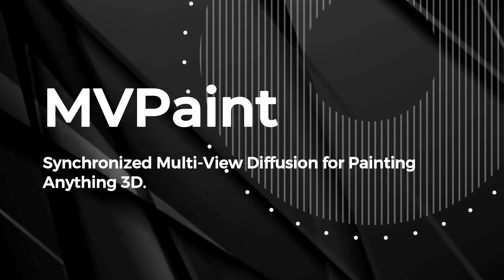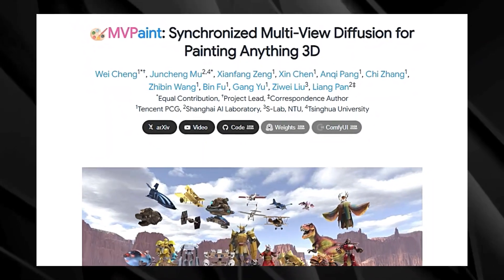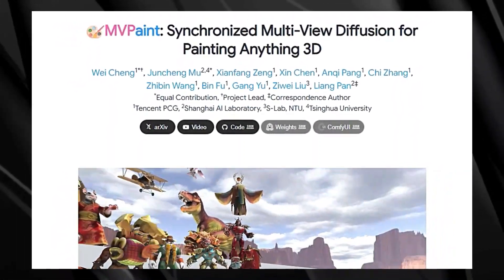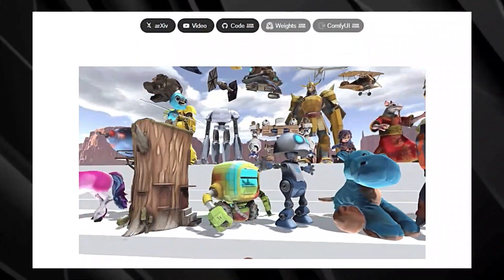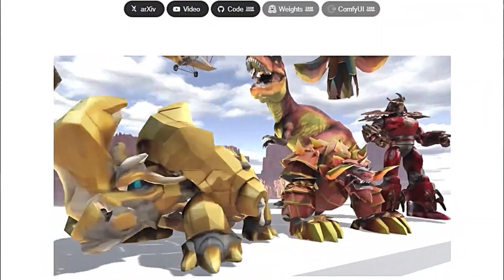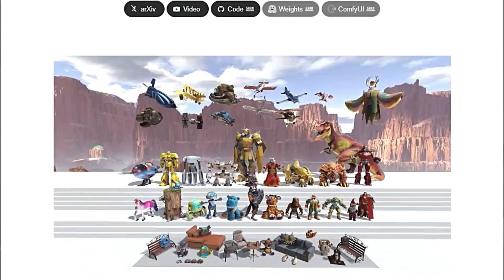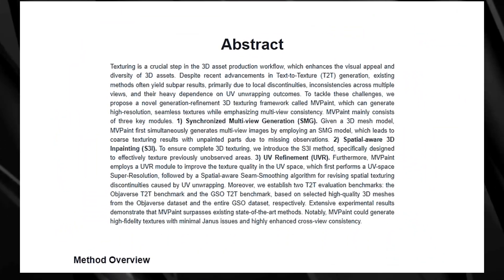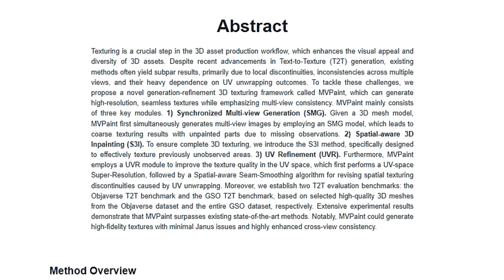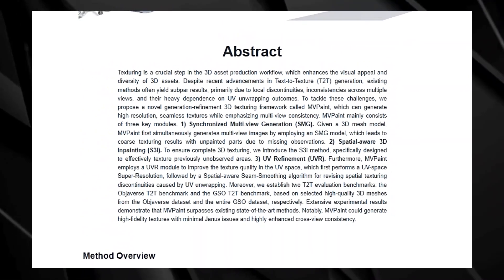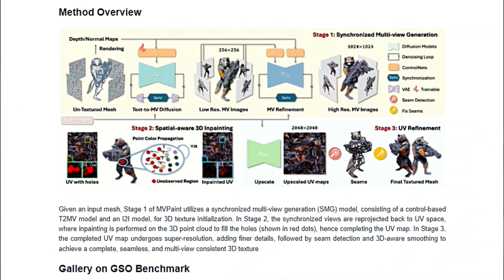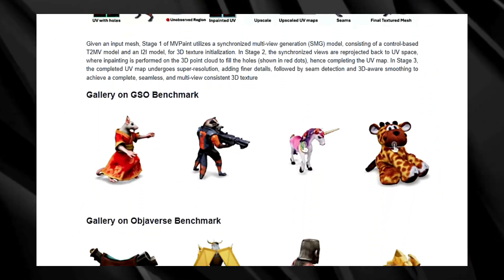Paper number four: MV Paint — synchronized multi-view diffusion for painting anything 3D. Imagine effortlessly creating stunning, realistic textures for your 3D models that look seamless and consistent from every angle. That's what MV Paint enables you to do. This innovative framework takes 3D texturing to the next level by combining the power of multi-view generation with advanced refinement techniques. Traditional texturing methods often struggle with inconsistencies across different views, resulting in textures that look disjointed or have visible seams. MV Paint tackles this by generating textures using a synchronized multi-view approach, simultaneously creating multiple views of the textured model to ensure consistency right from the start.